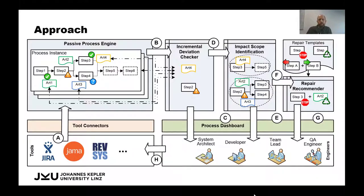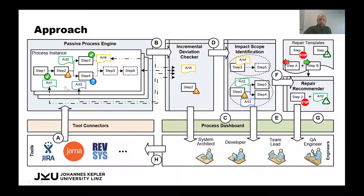We suggest addressing this the following way. We have a passive process engine that observes developers' activities in tools such as JAMA or JIRA and maps these to individual process steps. The novel part is incremental deviation checking: instead of checking all constraints at the same time, we focus on exactly which artifacts, properties, and relations have changed, so that only those constraints are incrementally checked.